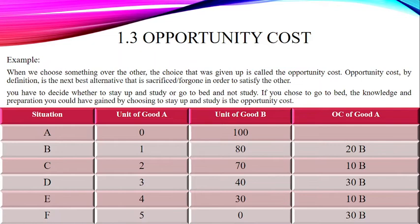When we choose something over another, the choice that was given up is also known as opportunity cost. The next best alternative that is sacrificed or forgone in order to satisfy the other choice — keep that in mind. For example, you have to decide whether to stay up and study or go to bed and not study. If you choose to go to bed, the knowledge and preparation you could have gained by staying up and studying becomes your opportunity cost.